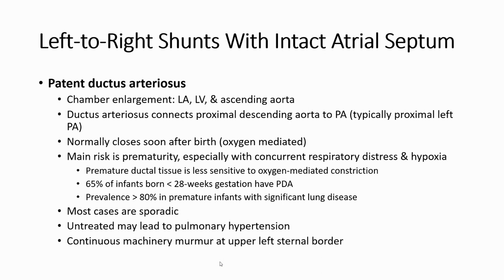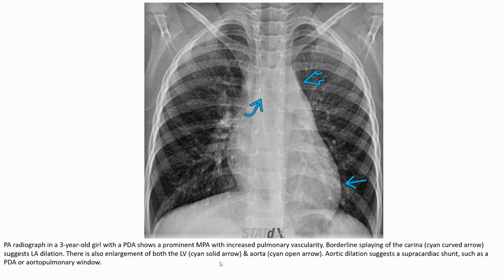PDA reveals a continuous machinery murmur at the upper left sternal border on auscultation. On chest radiograph, there is a prominent main pulmonary artery with increased pulmonary vascularity. Splaying of the carina suggests left atrial dilatation. There is also an enlarged left atrium and aorta. Aortic dilatation suggests a supracardiac connection such as a PDA or aortopulmonary window.